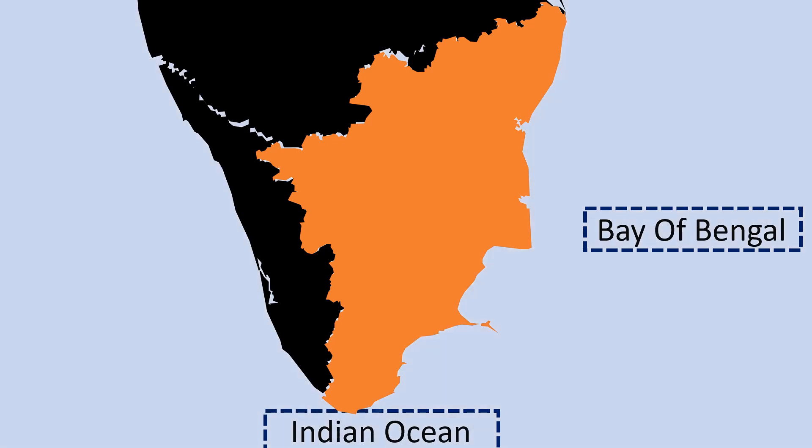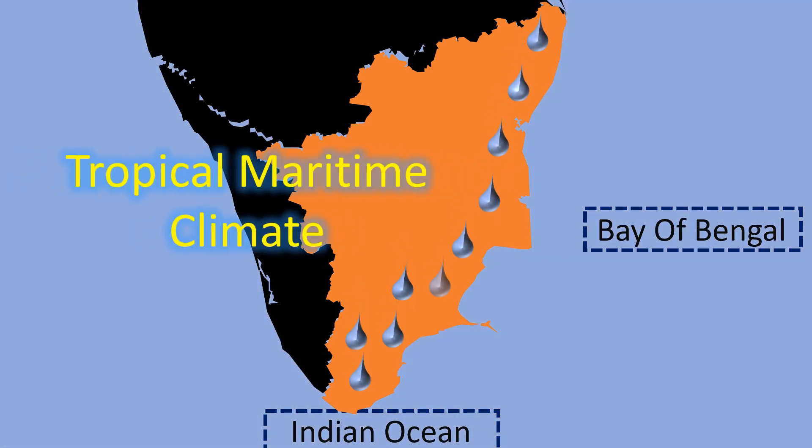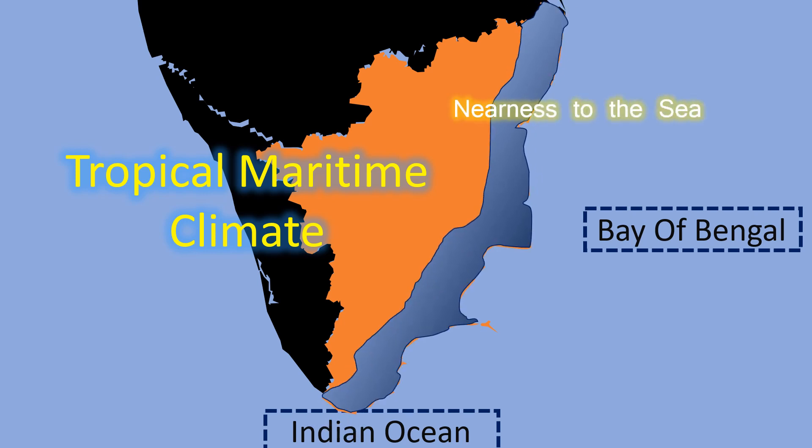Bordered by the seas, coastal Tamil Nadu experiences a tropical maritime climate, whereby the oceans influence the climate of that region, making it not only hot as it is in the tropical zone, but also cool as it is nearer to the sea.